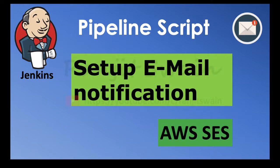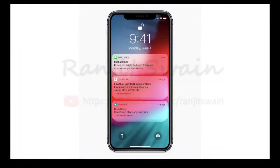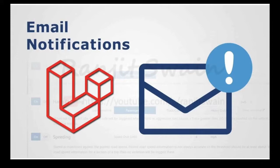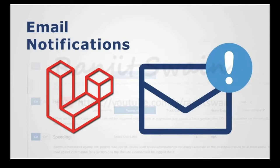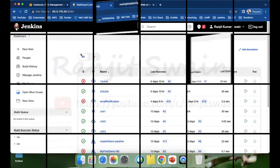Hello guys, welcome back. Notification is the most crucial part of any automations or any projects — even in day-to-day life. It could be your mobile notifications, email notifications, etc. Today in this video, we'll see how we can set up email notifications in our Jenkins pipeline script. I'll show you how you can use the AWS SES service to generate the SMTP server credentials and use them in Jenkins to send emails step by step.